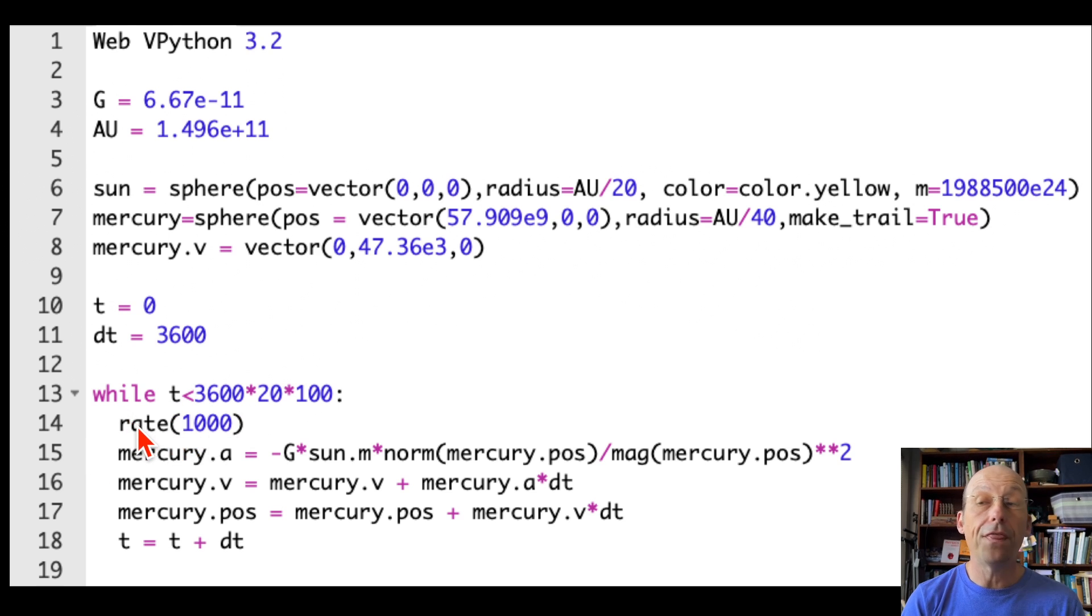Right here, rate 1,000, that says don't do more than 1,000 calculations per second, and that will control, if you increase that number in the rate, it's going to make your animation run faster. If you want to run faster, increase this. If you want to run it slower, decrease this, or change the time step.